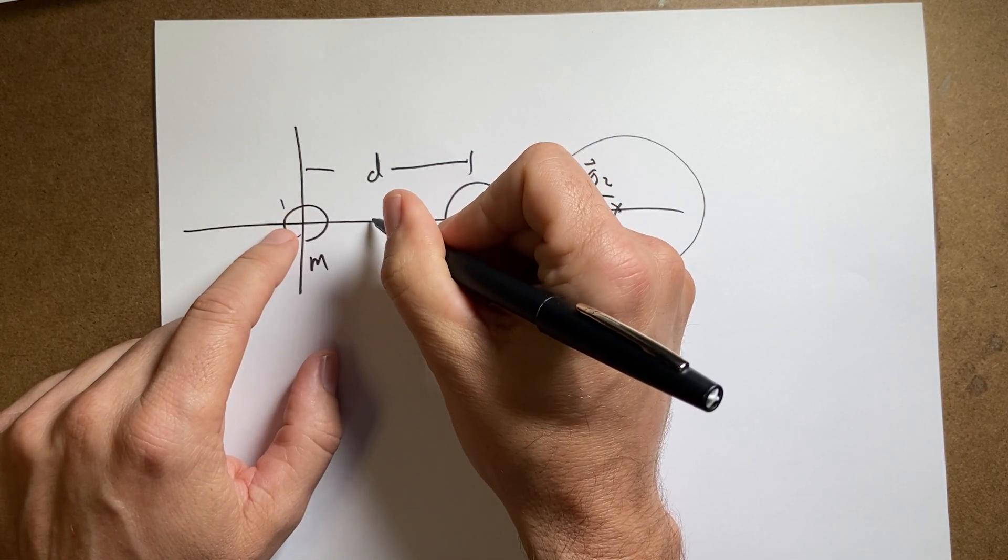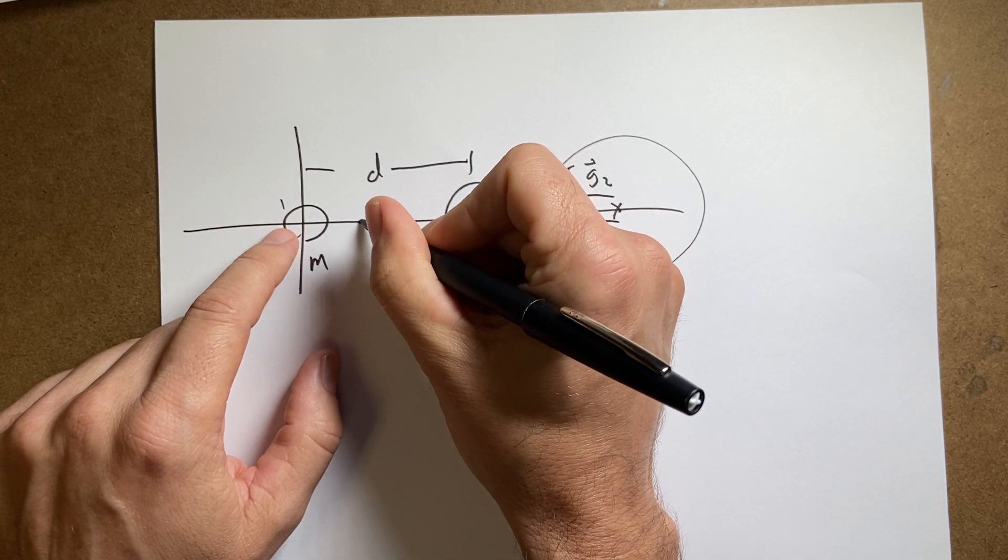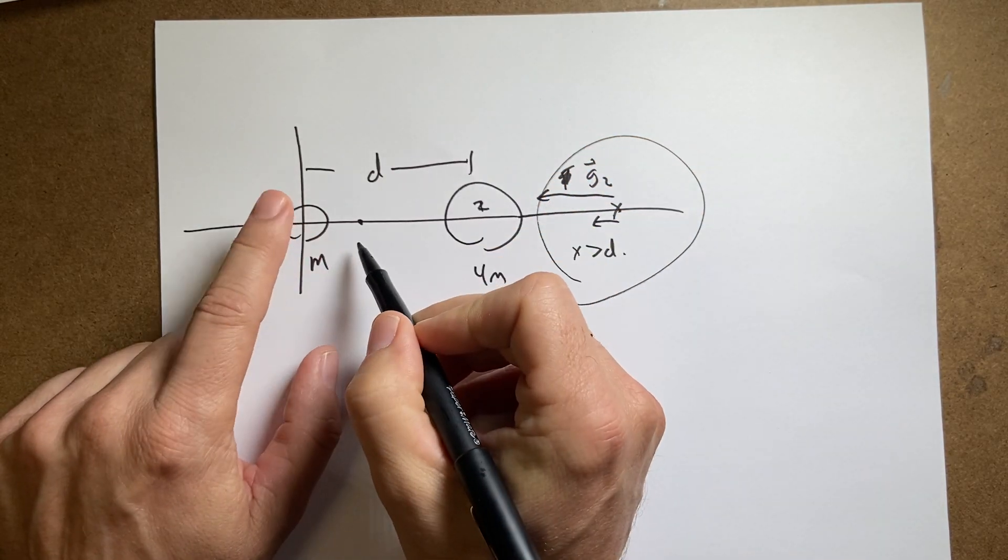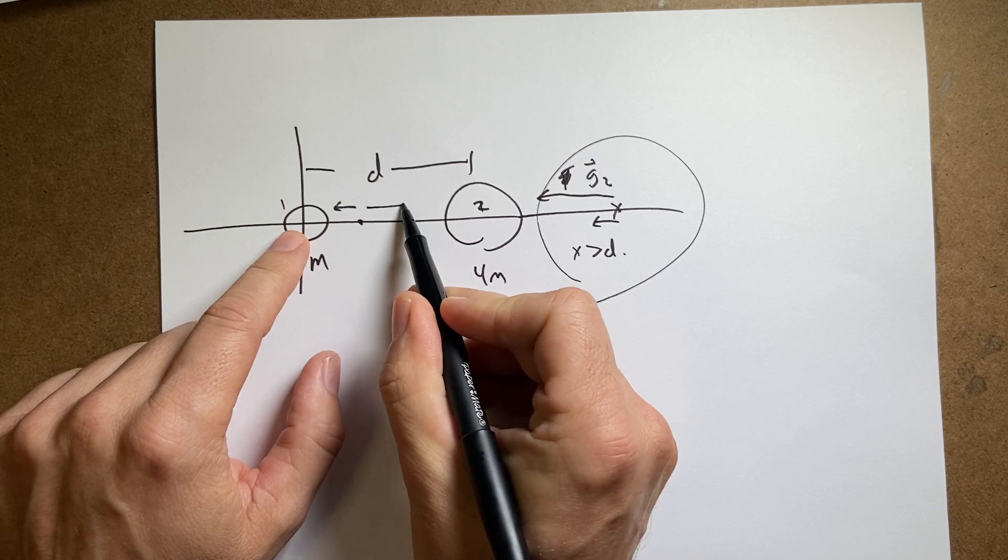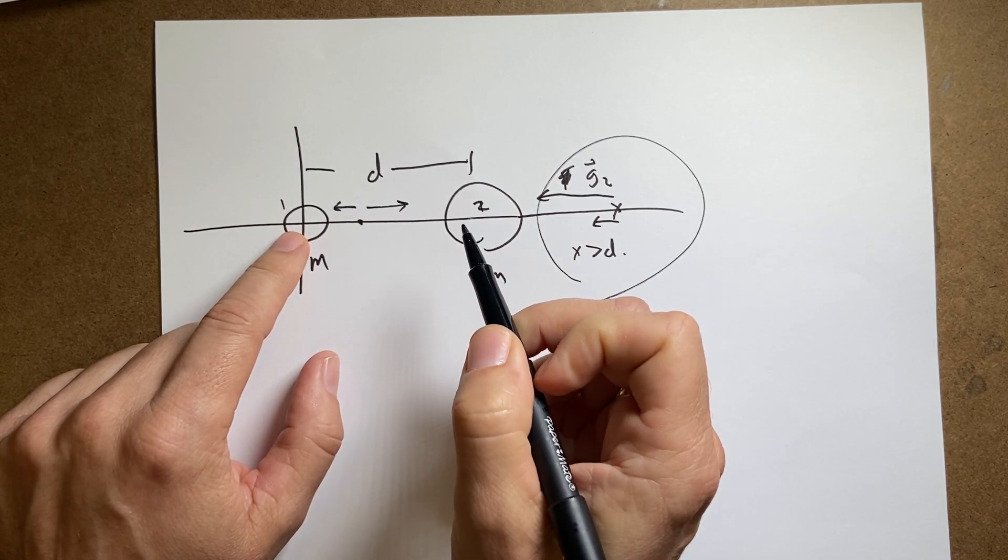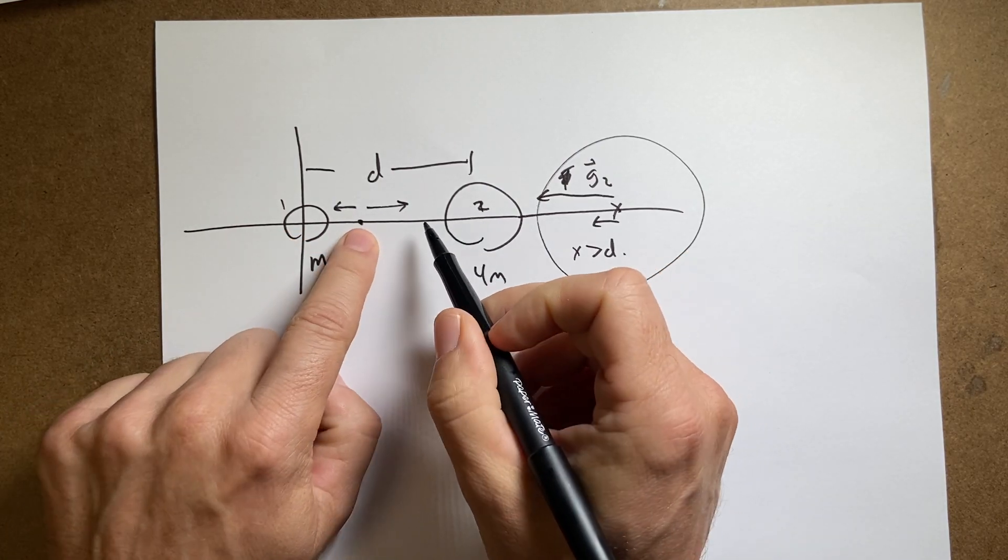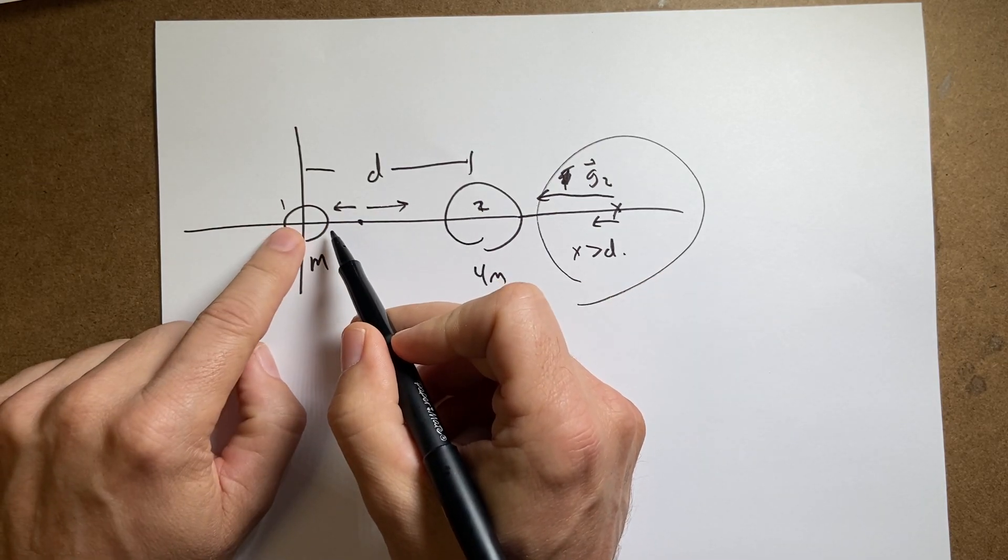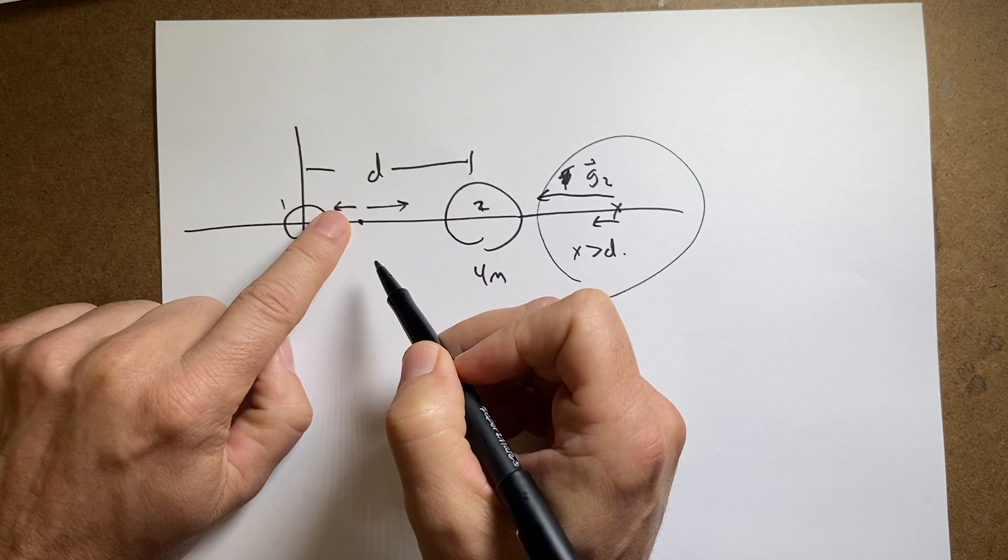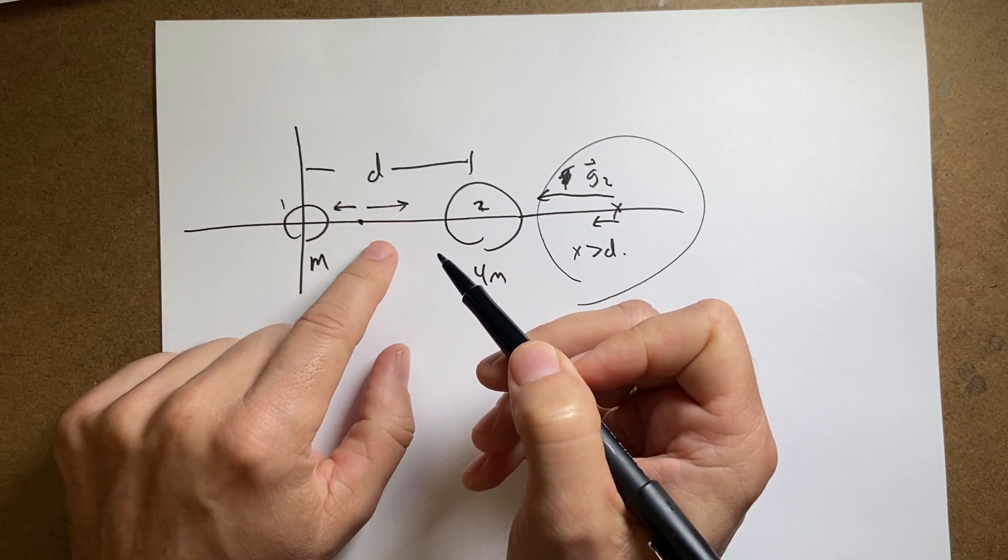What about over here? Let's pick a spot right here. Now this mass m1 is going to have a gravitational field going that way. This one's going to be going that way. Now they're not going to be the same magnitude. Depending on the distance. But it is possible that if I get close enough to this one, then the gravitational force from one could be as great as two and they could cancel.